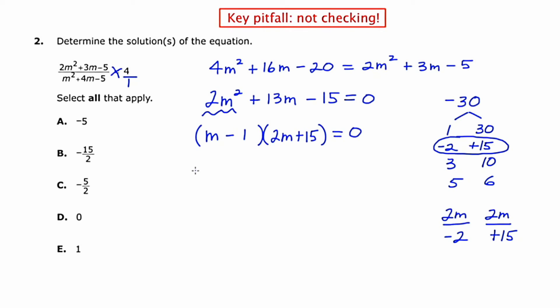So now I'm going to use the zero product property and set each of these factors equal to zero. So m minus 1 equals zero, leaving me with m equals 1. And 2m plus 15 equals zero, leaving me with 2m equals negative 15. And dividing by 2 leaves me with m equals negative 15 halves.